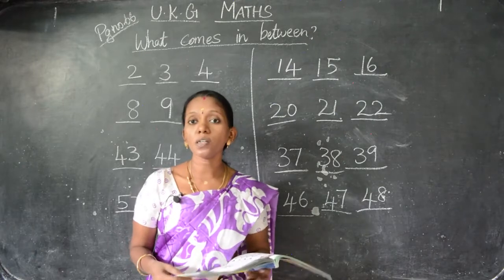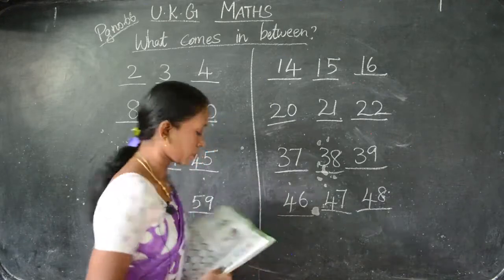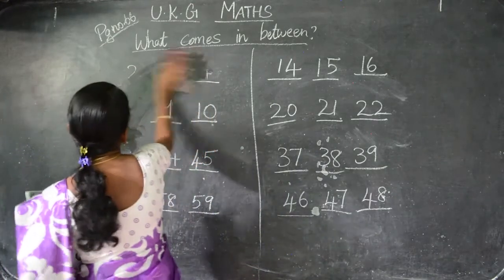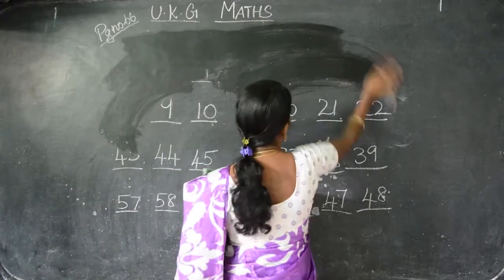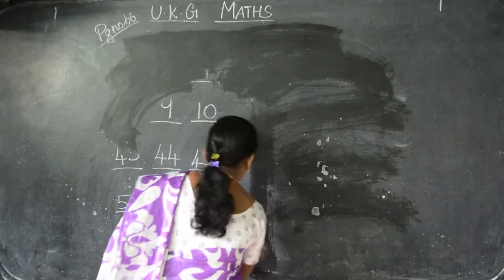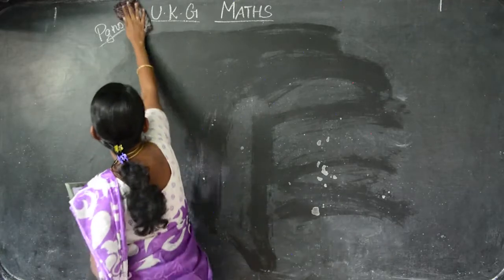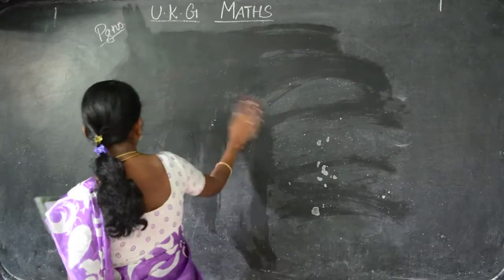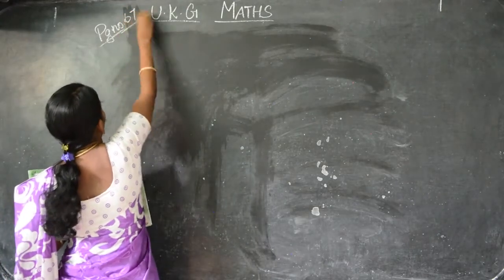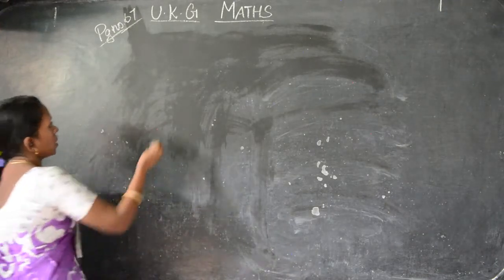Take page number 67. We already did what comes before and after — this is an activity for you. First we are going to write what comes after.